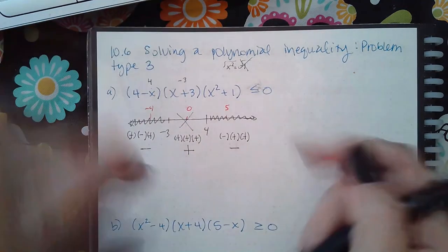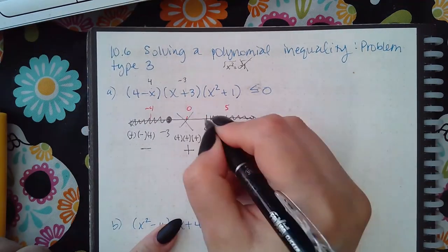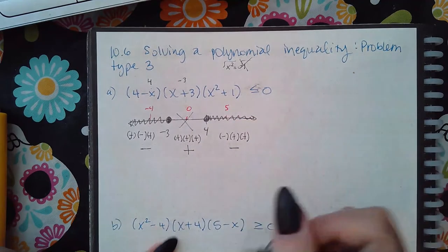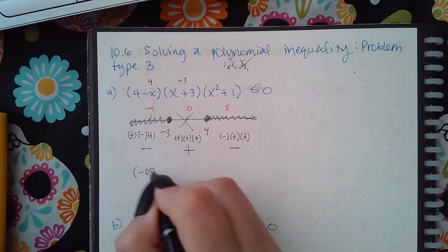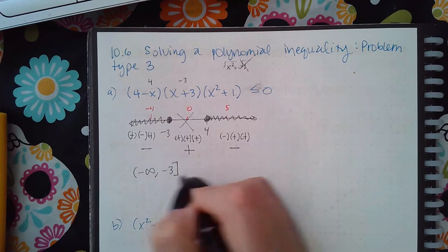This does have a bar so it will be a solid dot and solid dot, but there's a break in between so I do have to do both intervals: negative infinity to negative 3, and then 4 to infinity.